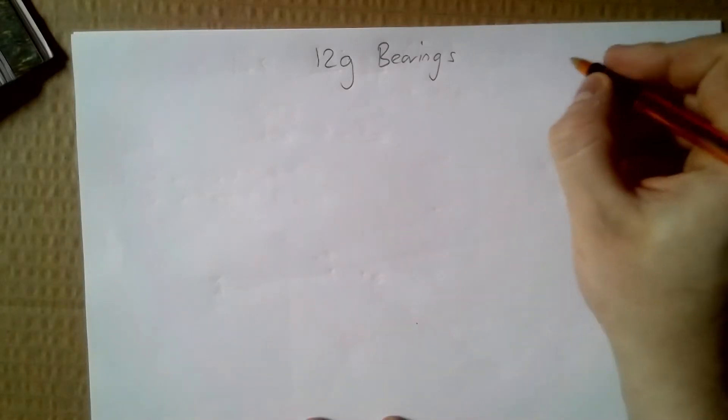This is the lesson for book 2B, 12g on bearings. The most important thing to learn about bearings are the rules that come with them.